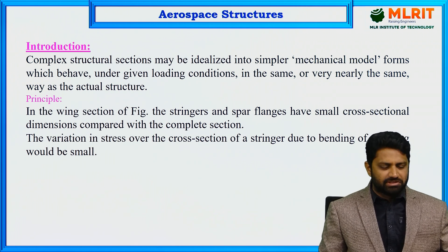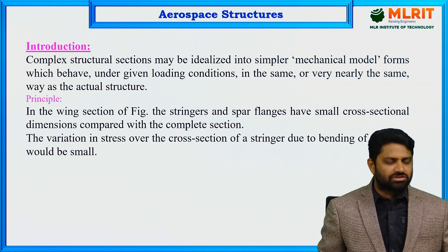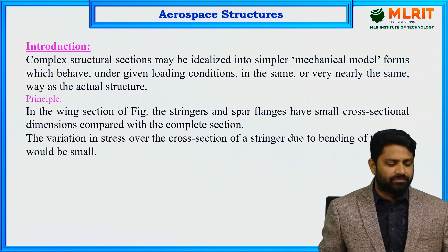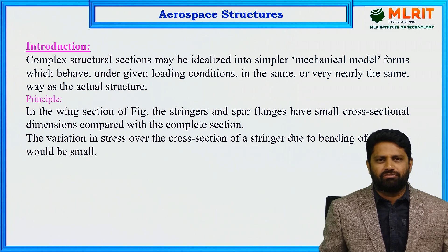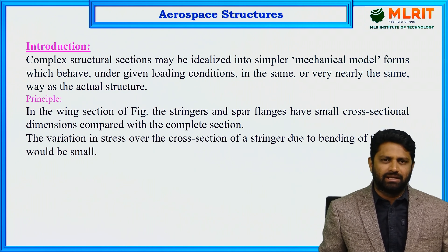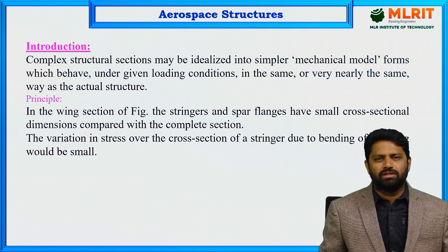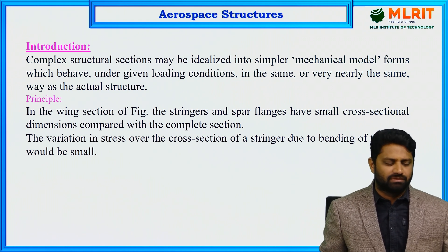Coming to the idealization — what is idealization? When it comes to the construction of aircraft, there will be a very large scale of components present. For example, that may be the wing component, the fuselage component, the empennage or tail plane, nose — all these are very large components, and even internally there will be many more components present.